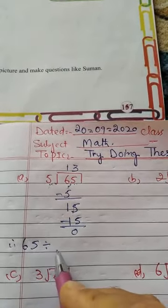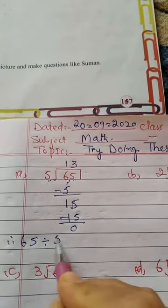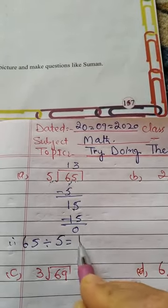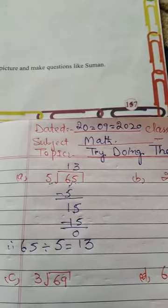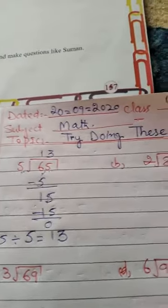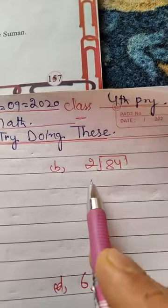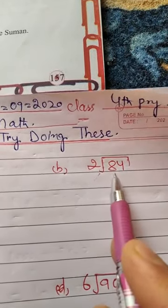For example, if you have 65 rupees and divide by 5, you get 13 rupees each.